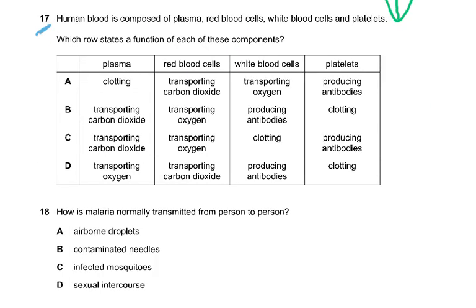Question 17: human blood is composed of plasma, red blood cells, white blood cells, and platelets. Red blood cells transport oxygen, white blood cells produce antibodies, and plasma transports carbon dioxide in solution. These are all syllabus points. The answer to question 17 is B.